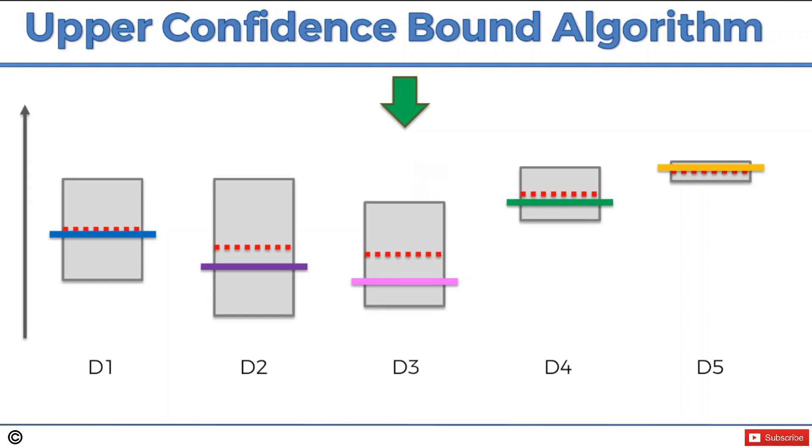Then we'll use this one, bounds will decrease. Now we're back to the best one, bounds decrease. Then we're just going to be exploiting this one and exploiting this one because we found out that it's the best one. That is, in essence, the whole concept behind this upper confidence bound algorithm, and that's how it solves the multi-armed bandit problem.